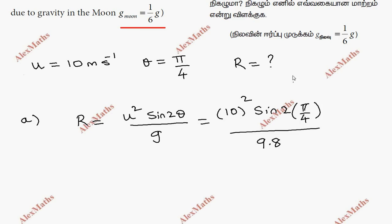So we know 9.8 at the denominator. Rounding off, we get 10.20 meters on Earth.